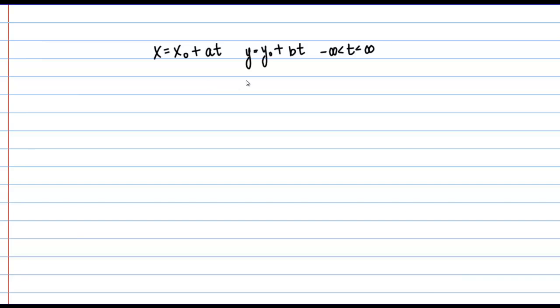There are two ways we could approach this. One, we could plot some points on a graph and see what shape we get. Or two, we could eliminate the parameter T to get a Cartesian equation in terms of X and Y, then see if we recognize that form. That's the approach we're going to take.